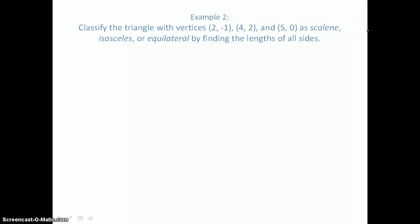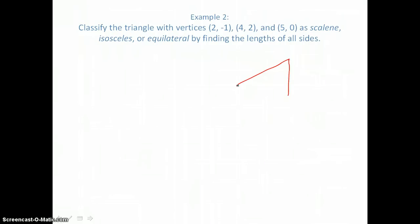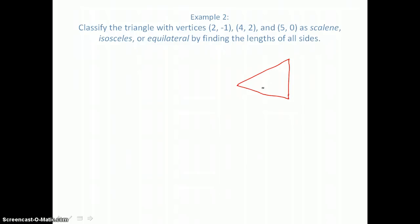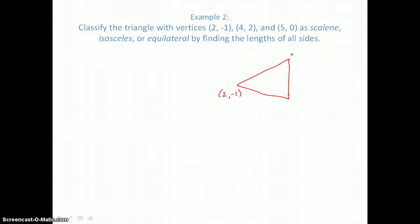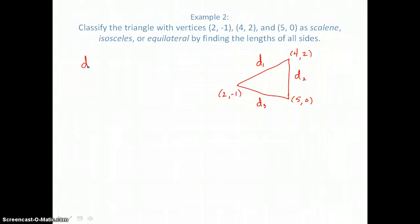Here we want to classify the triangle with vertices at (2, -1), (4, 2), and (5, 0) as scalene, isosceles, or equilateral by finding the lengths of all three sides. Let's draw a triangle and label the vertices, then label the three distances d sub 1, d sub 2, and d sub 3, and use the distance formula to find each.